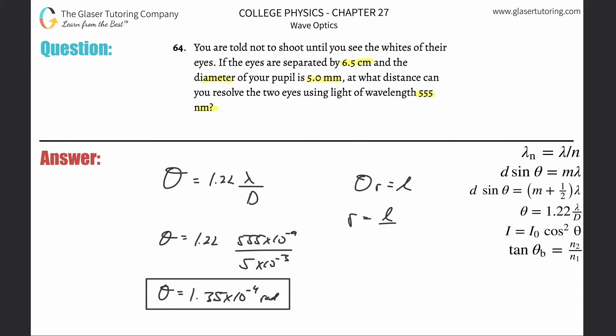The distance between the eyes, L, is going to be 6.5 centimeters, so that's 6.5 times 10 to the minus two, and then divided by that angle we found, 1.35 times 10 to the minus fourth. Plug it in: 6.5 times 10 to the minus two divided by that value.